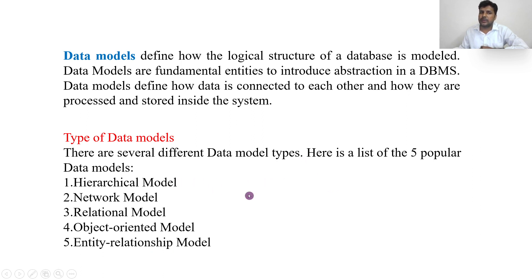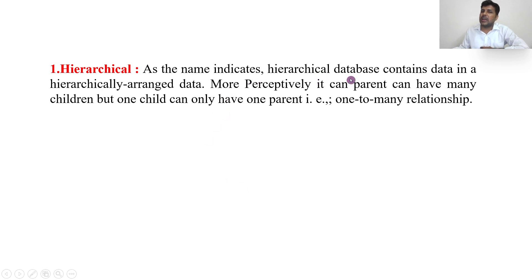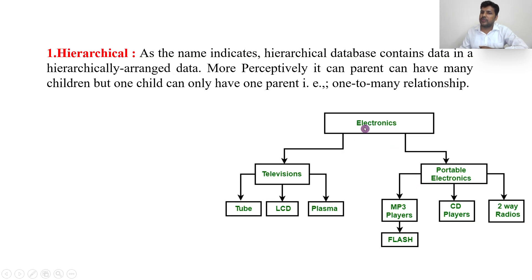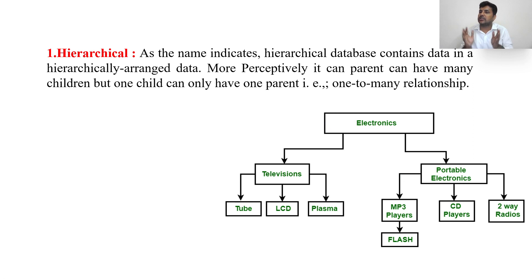Let us start first with the hierarchical model. As the name indicates, in the hierarchical data model, the database contains data in a hierarchically arranged structure. It is also called a tree model. You can see a diagram here — from Electronics, it branches into Television and Portable Electronics; Television further branches into Tube, LCD, and Plasma; Portable Electronics branches into MP3 Player, CD Player, and Two-Way Radio. If you reverse this, it looks like a tree — root, branches, sub-branches, and leaves.